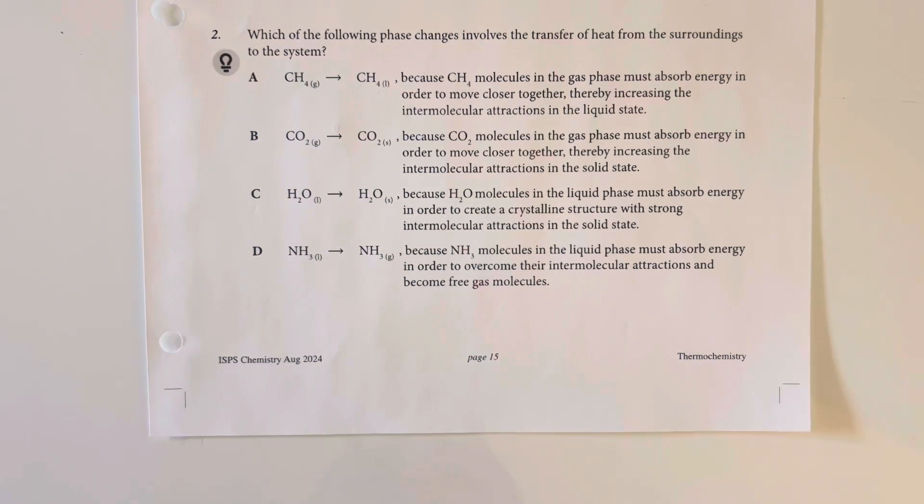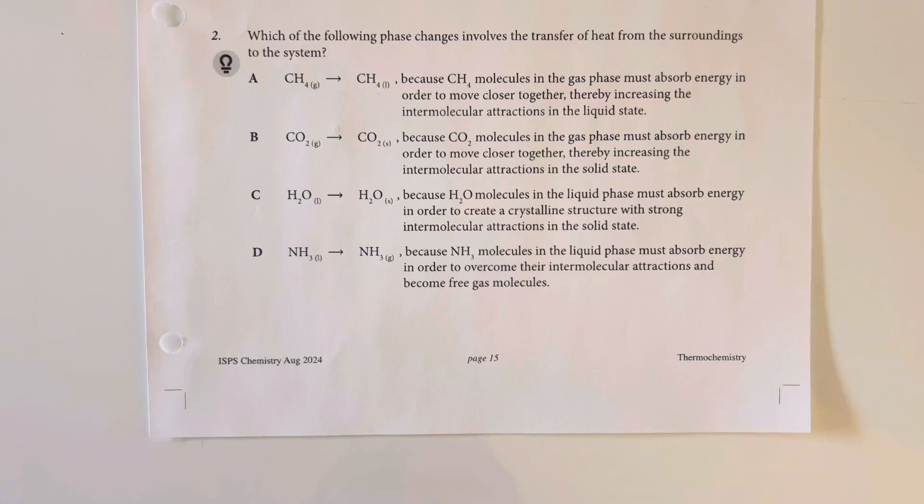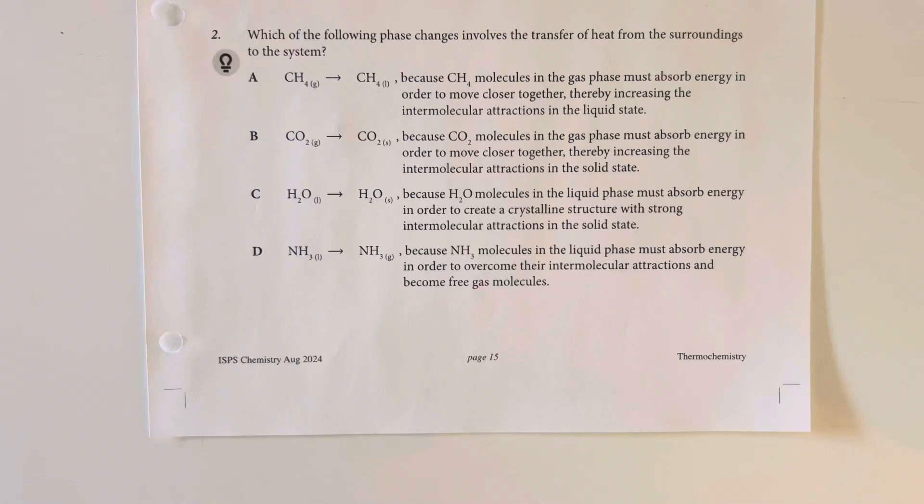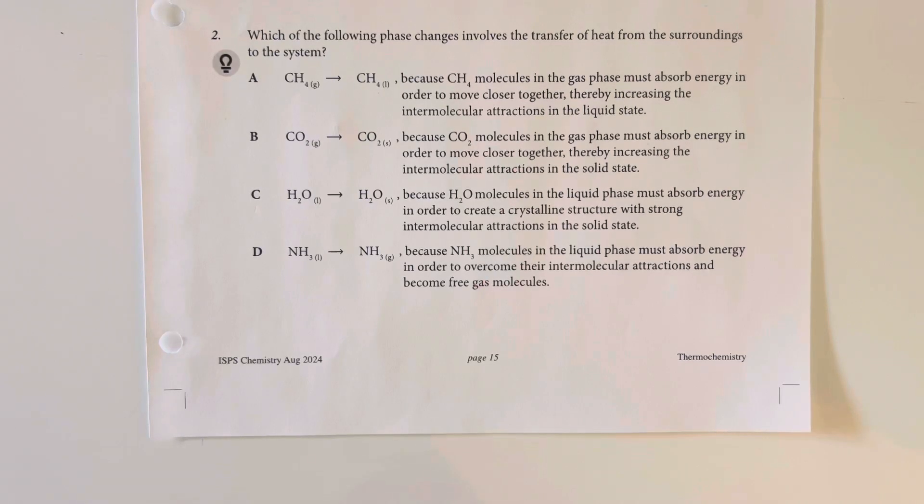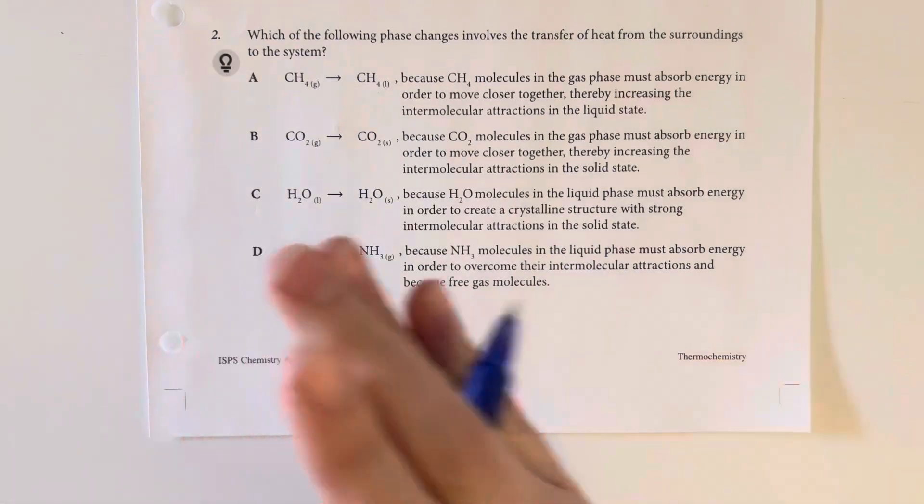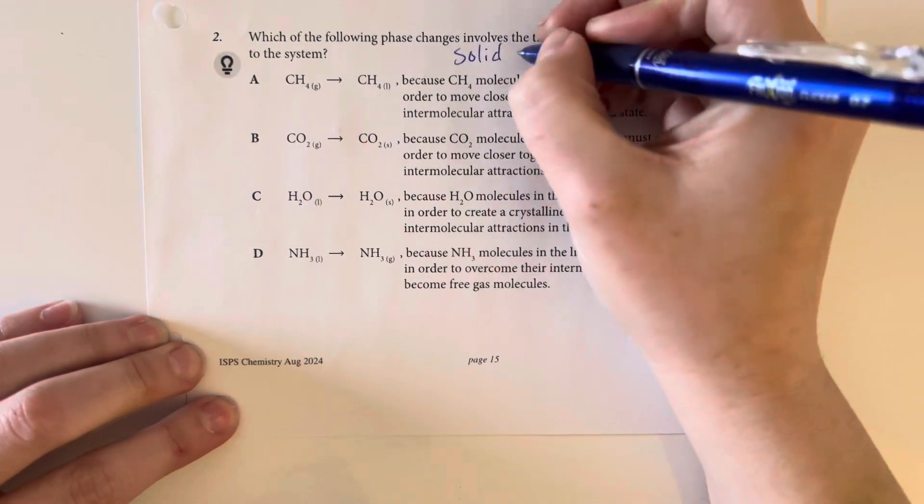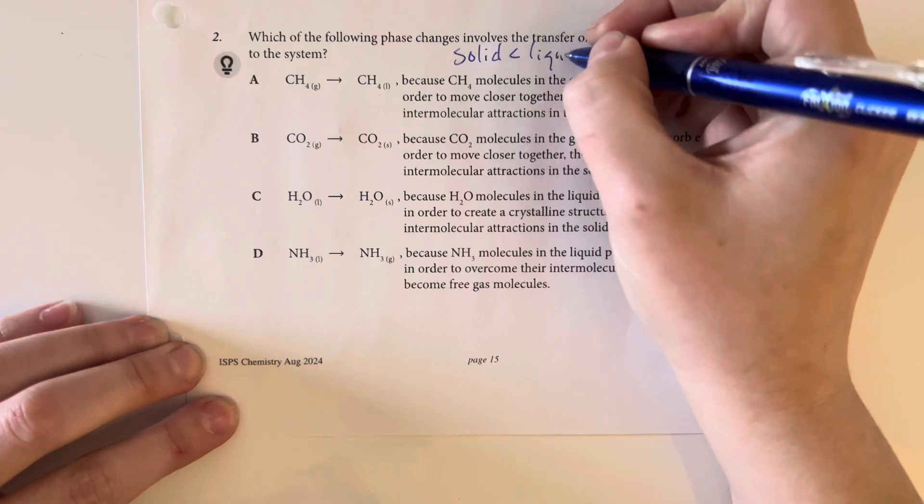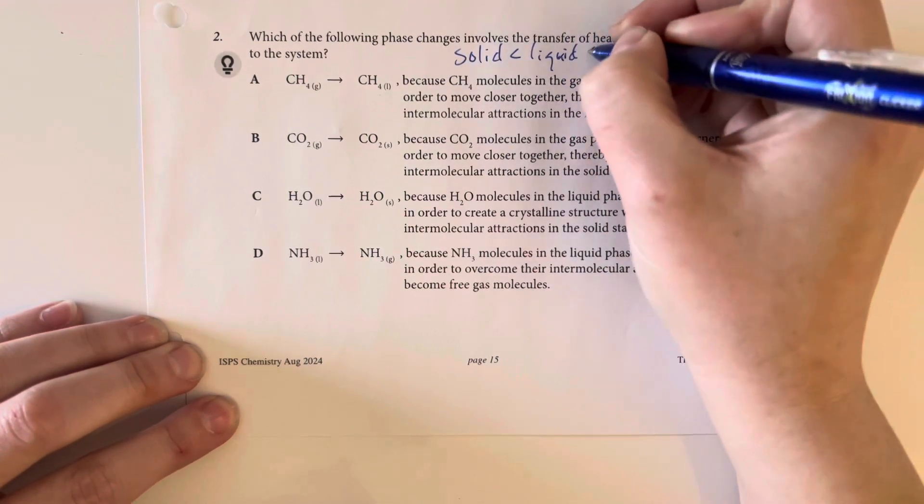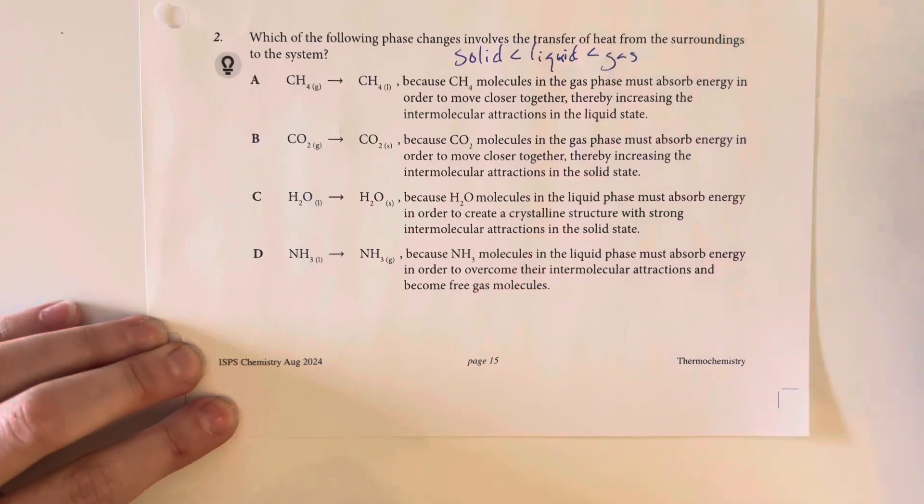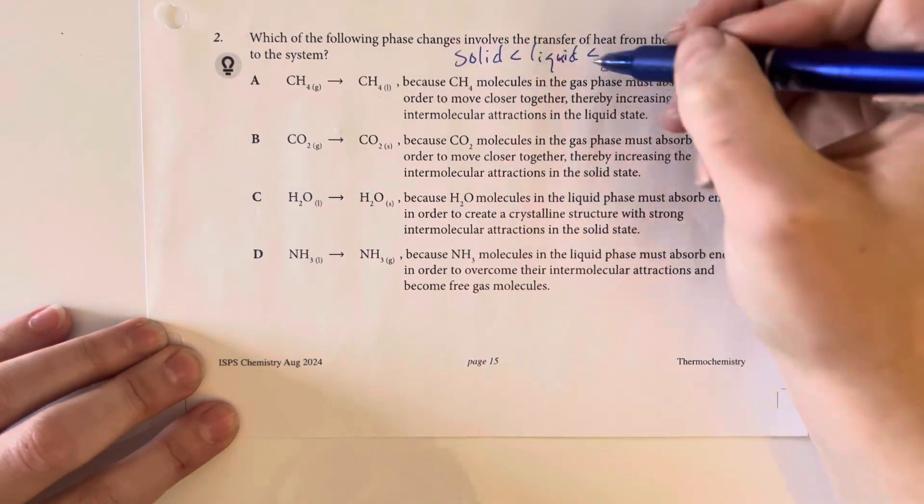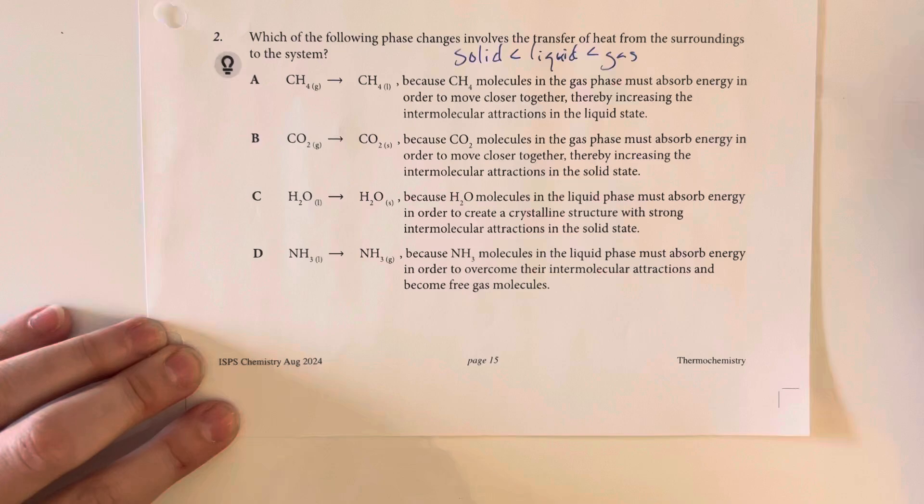Which of the following phase change involves the transfer of heat from the surroundings to the system. So from the surroundings to the system mean that I am going to be increasing my overall energy state within the phase change. So I am going to be going from a lower energy state to a higher energy state. As we remember, solid is going to be less energy than liquid, which is less energy than gas. So I am looking for something that goes either from solid to liquid or from liquid to gas or solid to gas.